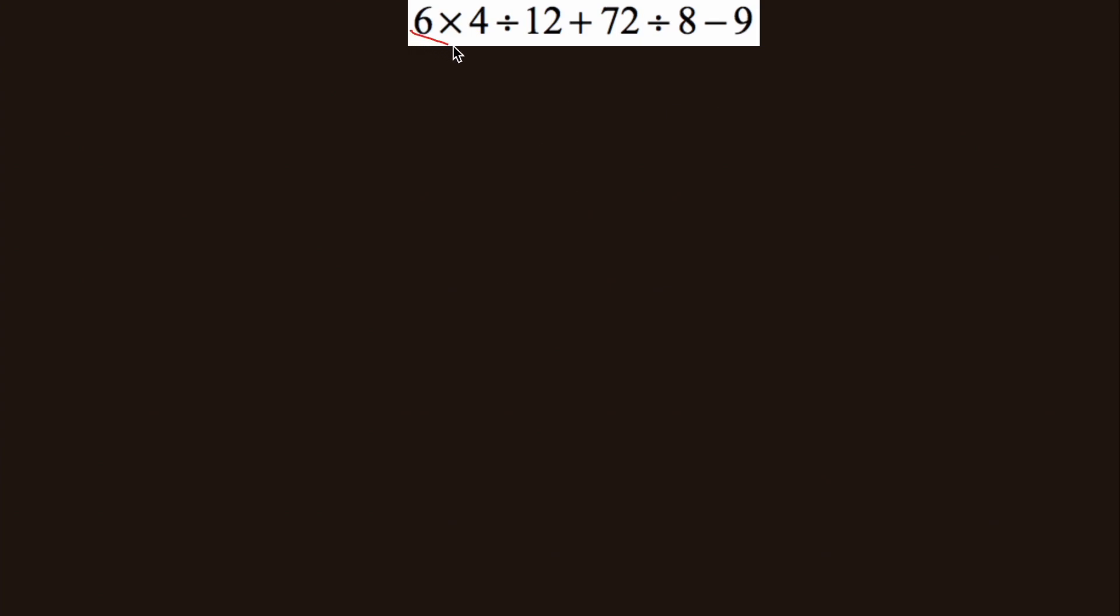Here, we do the multiplication in this term and the division in this term and rewrite. Next, we do this division. And then we do the addition and subtraction in order. And we get 2.